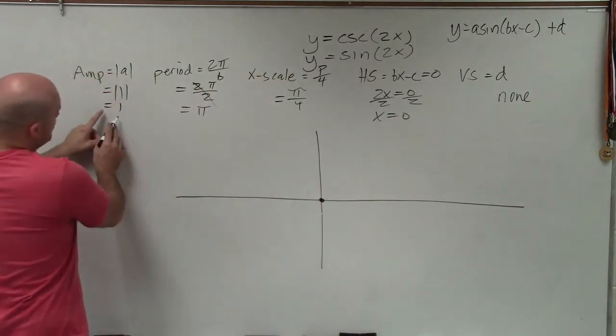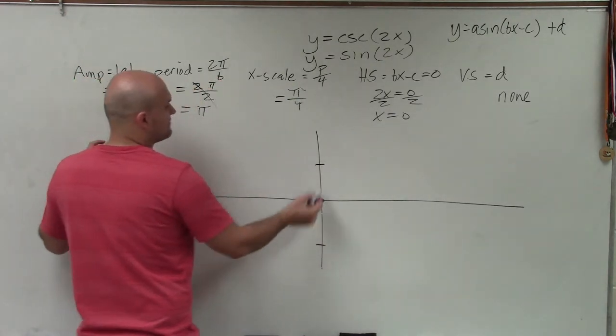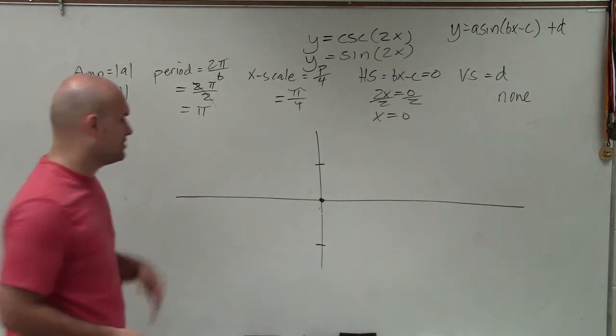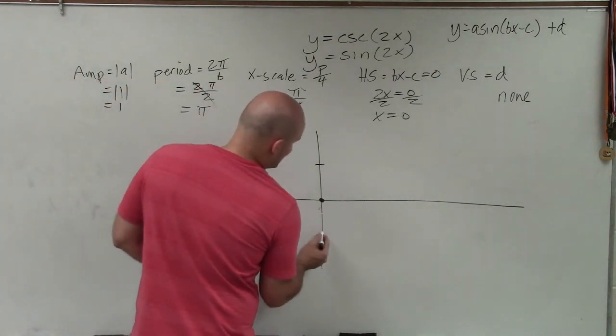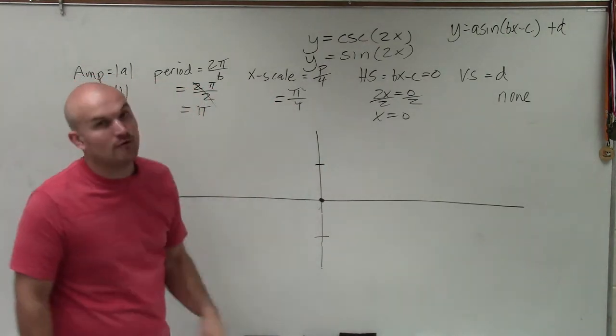The next thing I want to do is make sure I know where my amplitude is, which is going to be up 1 and down 1, right? Your graph is only going to go as high as the amplitude and as low as the amplitude. So I plot those two points next. The next thing is I want to make sure I write in my x scale. So my x scale is pi over 4.